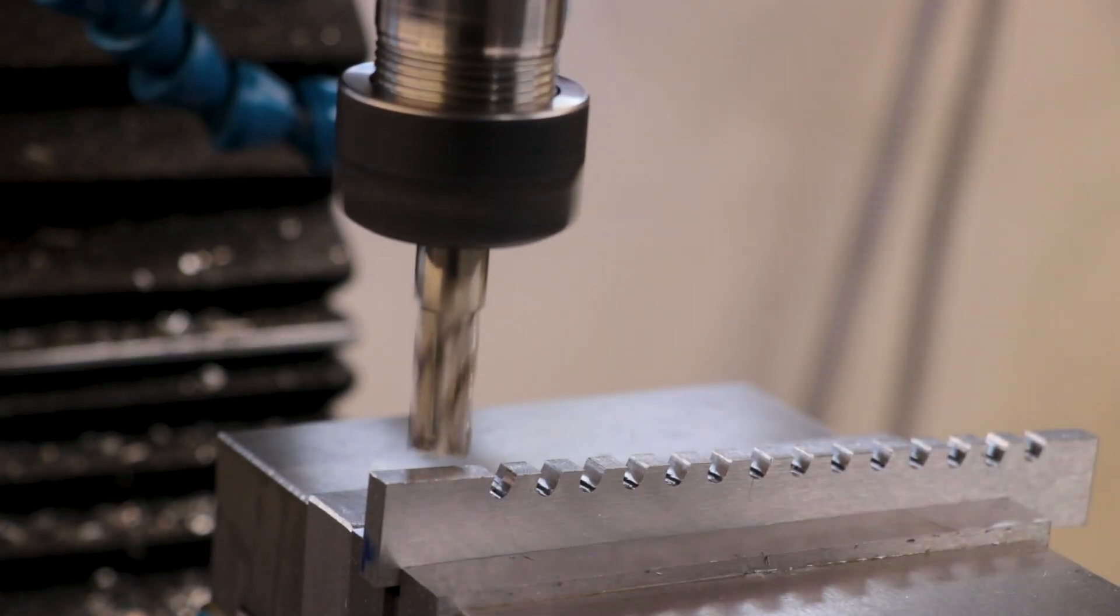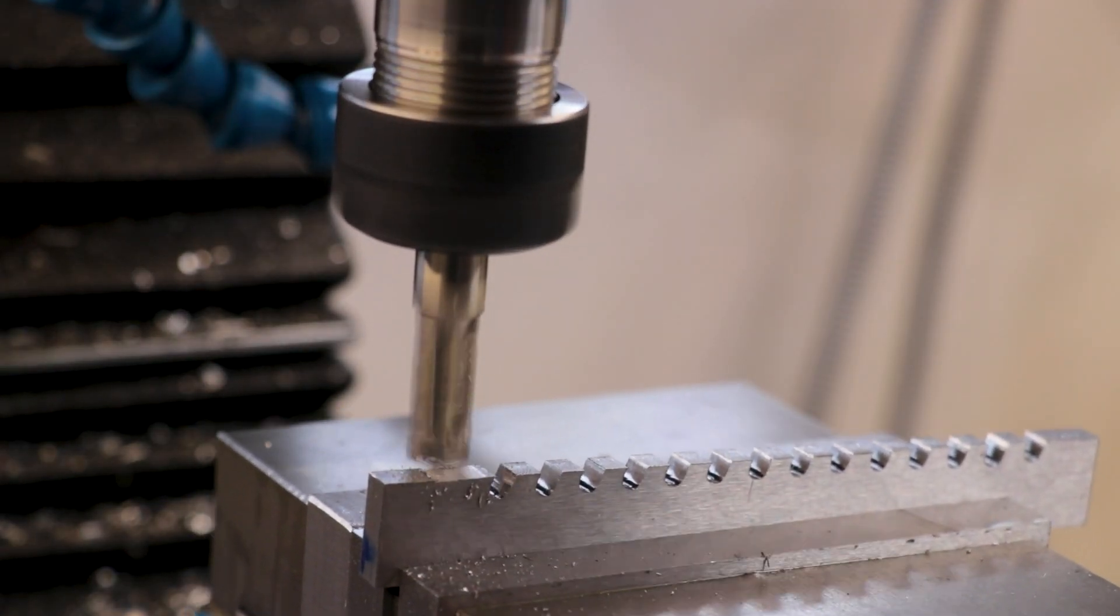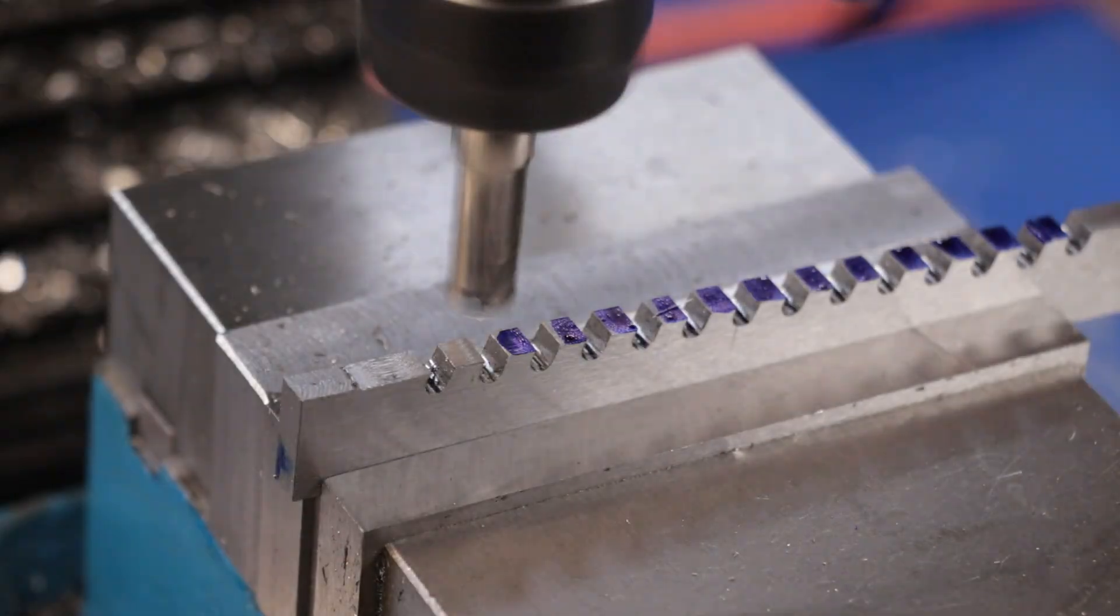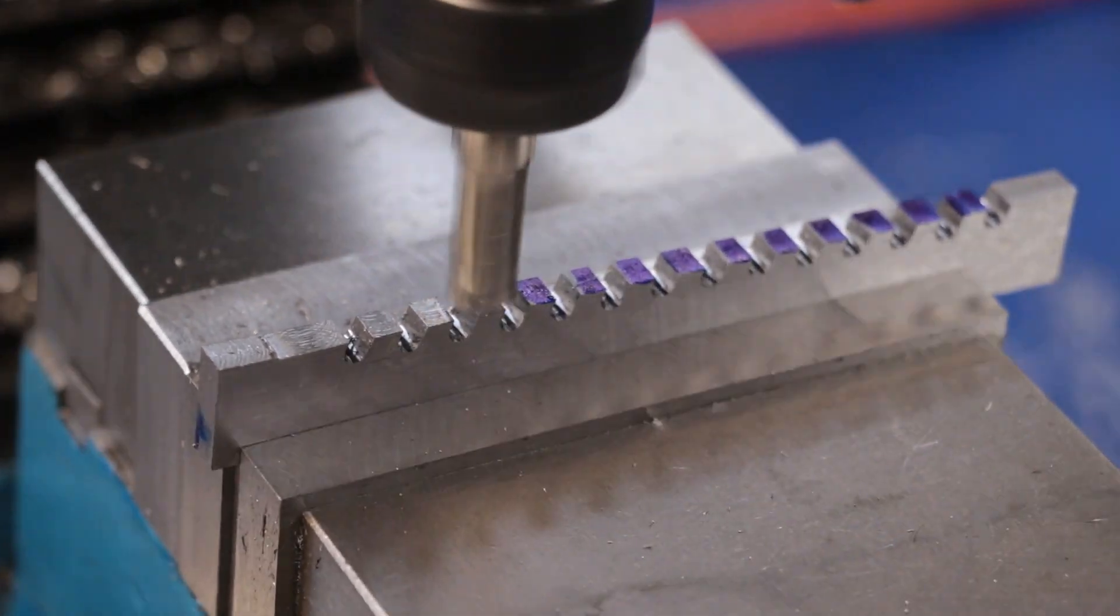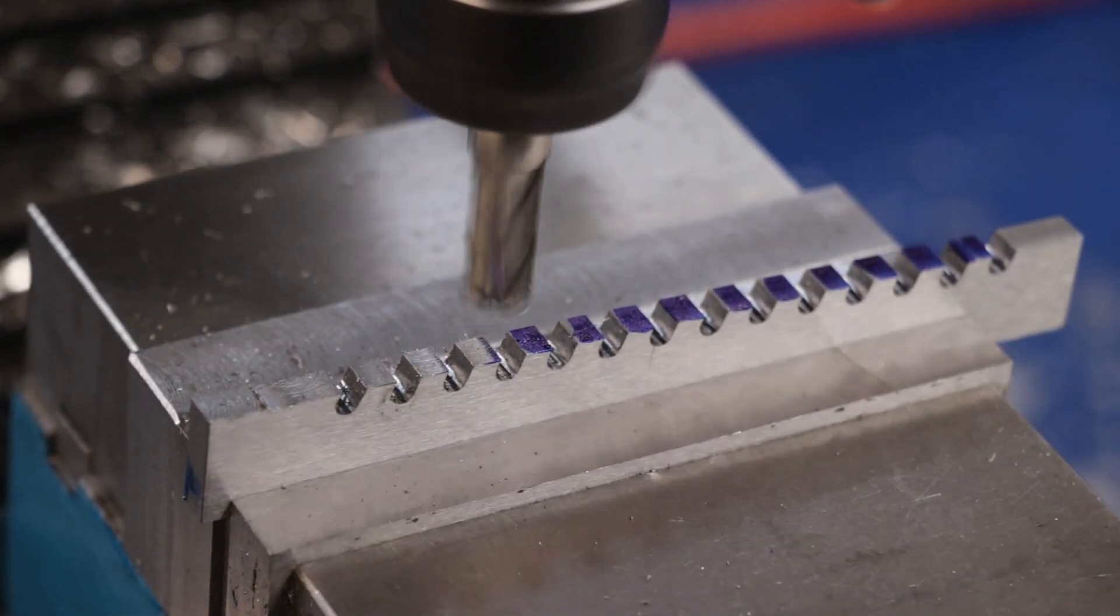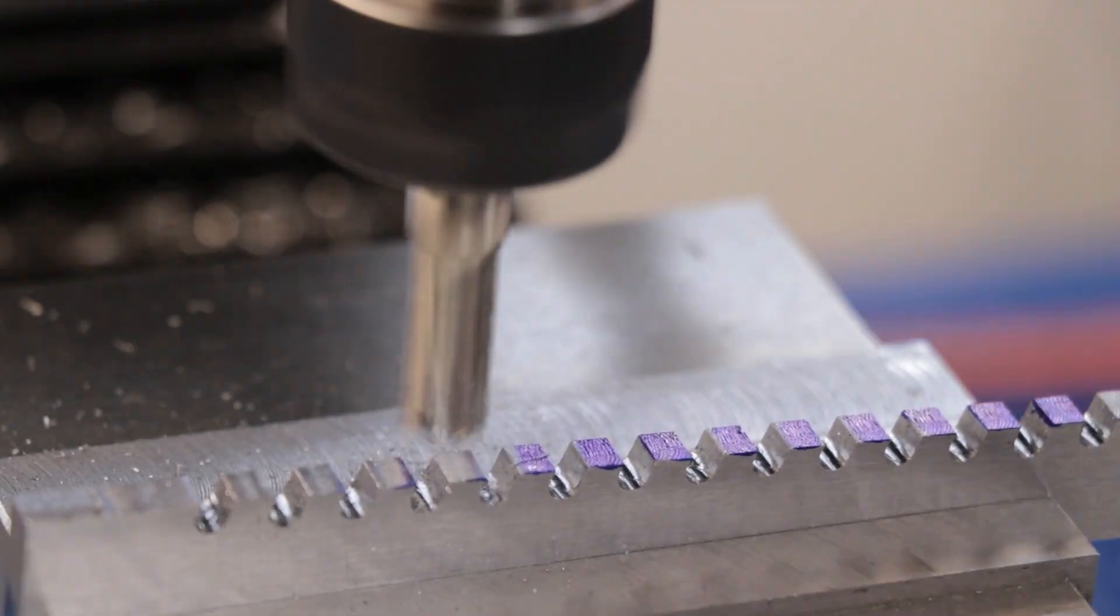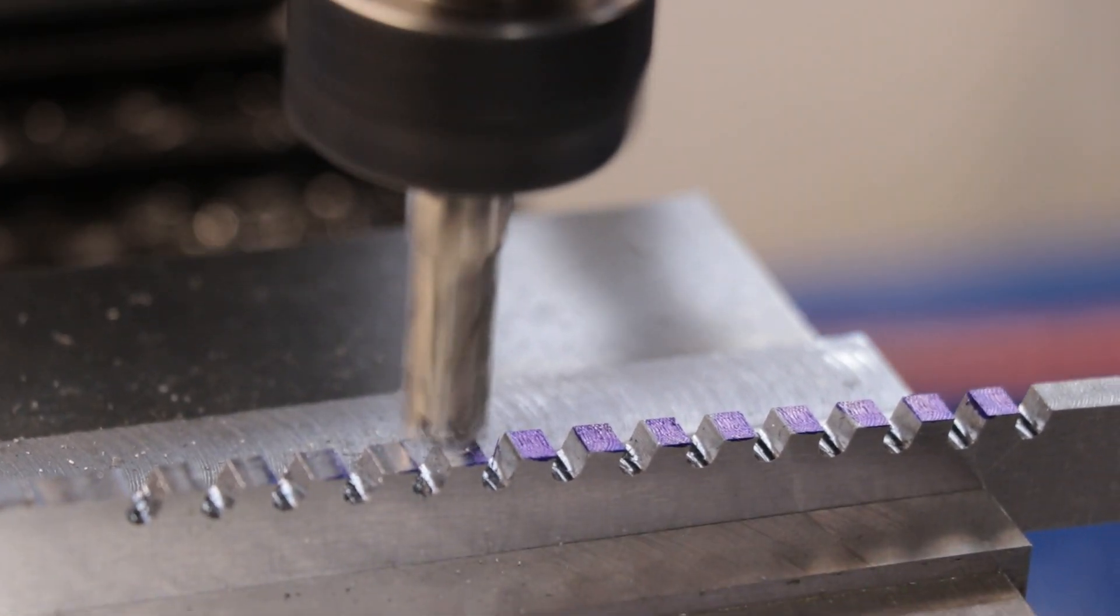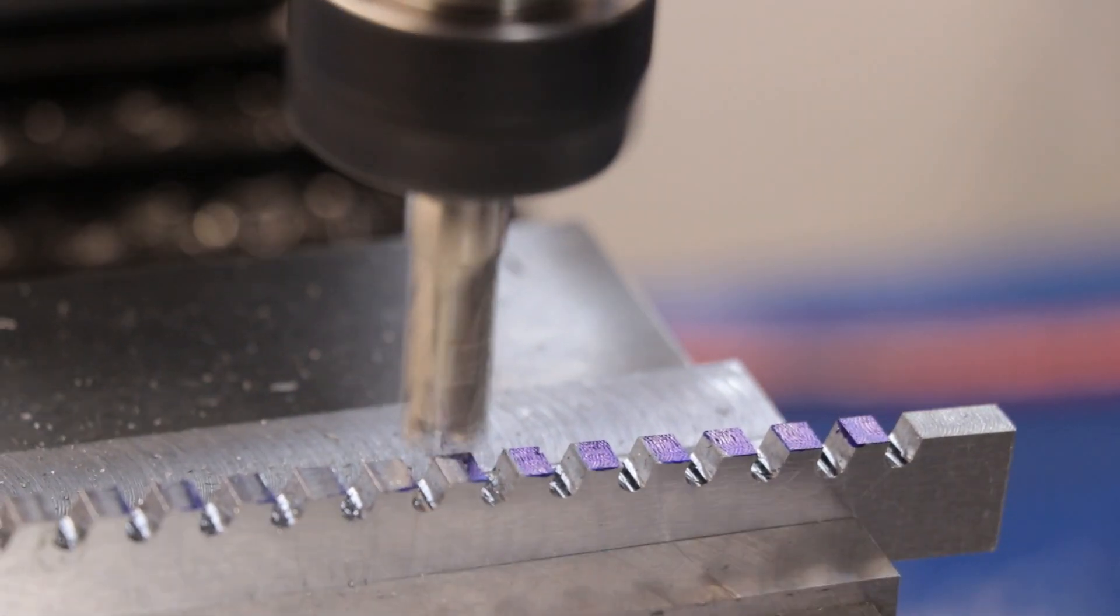We need to machine in the clearance behind the teeth and that'll prevent the back of them from rubbing up against the work. So I'll hold the broach at an 11 degree angle and I'll remove the material behind the cutting edge making sure not to take out any of the cutting edge itself. And because it was a bit difficult to tell exactly what I was cutting I used some marker on the teeth to show me exactly what I had and hadn't taken off.